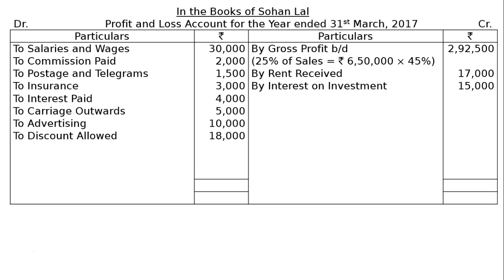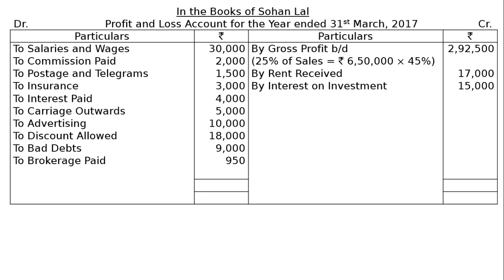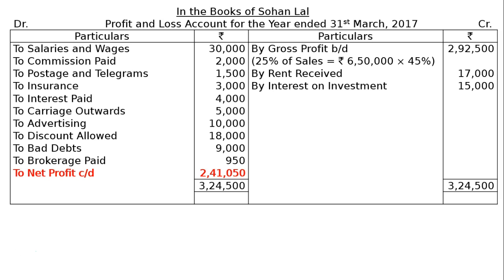Next is Bad Debts, which is also a selling expense and shown on the debit side. Then Brokerage Paid, a selling expense, rupees 950. Total the credit side: rupees 3,24,500. Deducting all expenses from gross profit gives To Net Profit carried down of rupees 2,41,050. This is the final answer.